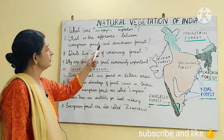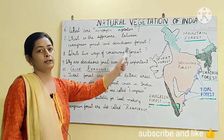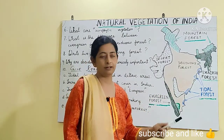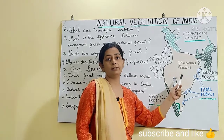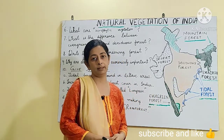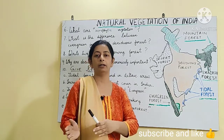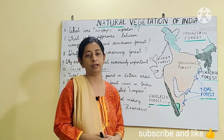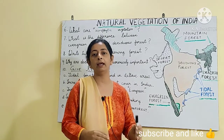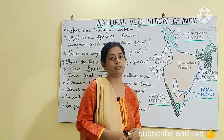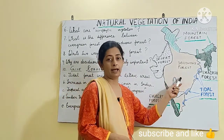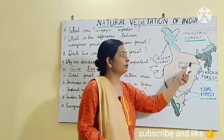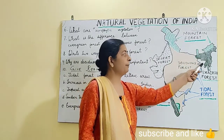Next is: what is the difference between evergreen forest and deciduous forest? The most important difference is that deciduous forests shed their leaves for six to eight weeks during the spring season, that is in the months of March and April. Evergreen forests, as the name suggests, do not shed their leaves in any part of the year, which is why they are called evergreen forests. Deciduous forests receive comparatively less rainfall.